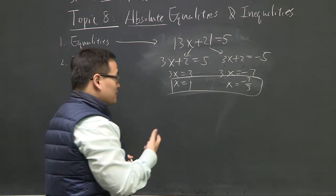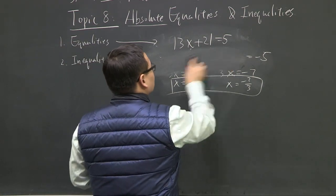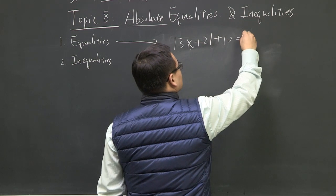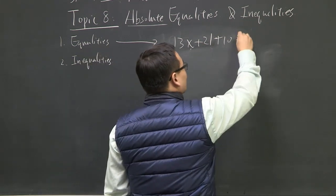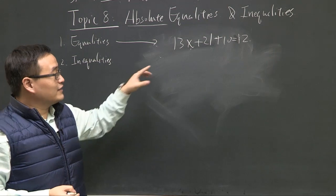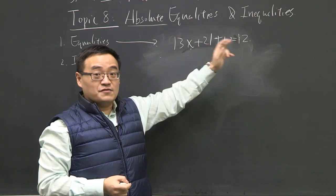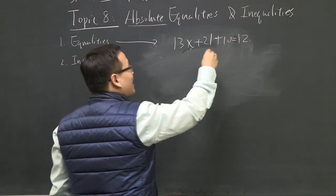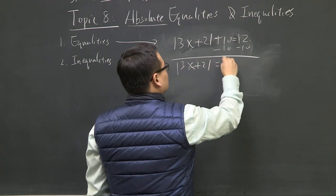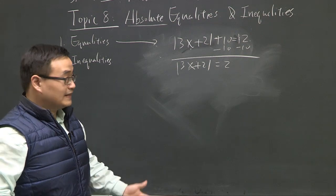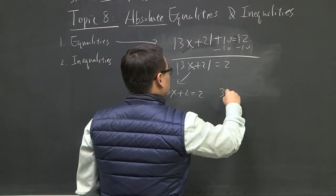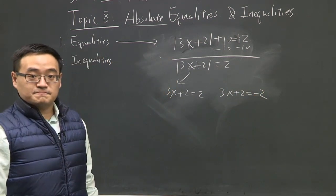What if we make it slightly more difficult? Let's say we have the absolute value of 3x plus 2 plus 10 equals 12. You can't just strip away right there and say it's equal to positive or negative 12. Always isolate first. Subtract 10 from both sides, so you get the absolute value of 3x plus 2 equals 2. Then you can go from there — split into 3x plus 2 equals 2, or 3x plus 2 equals negative 2, and you're done.